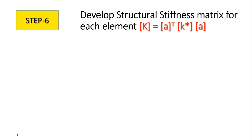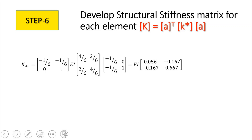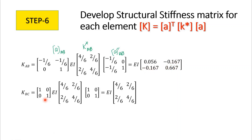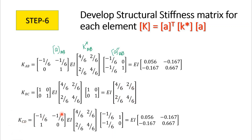Next, we develop the structural stiffness matrix for each element using the equation K = A_transpose × K* × A. For element AB, multiplying gives values of EI × [0.056, −0.167; −0.167, 0.667]. For BC, since both displacement transformation matrices are identity matrices, the result is EI × [4/6, 2/6; 2/6, 4/6]. For CD, the same procedure is applied to obtain the structural stiffness matrix.